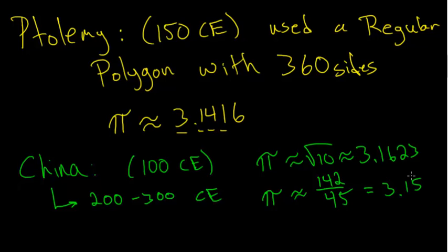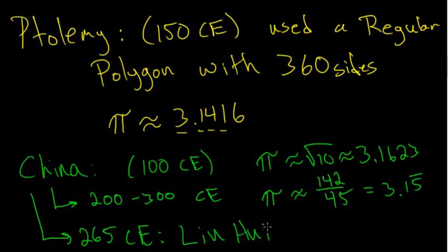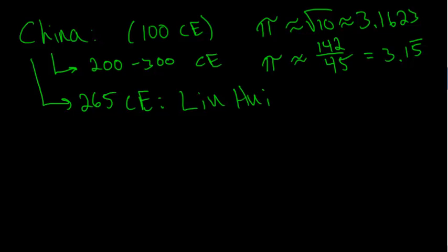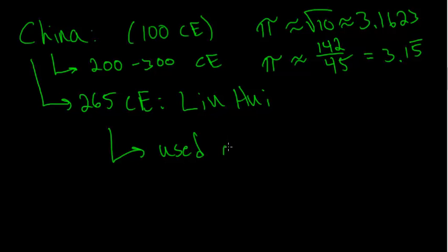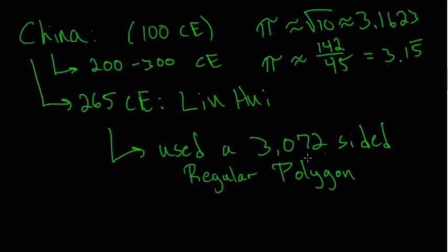In the year 265 CE, the Chinese mathematician Lu Hui used a 3,072 sided regular polygon to find that pi is about 3.1416.